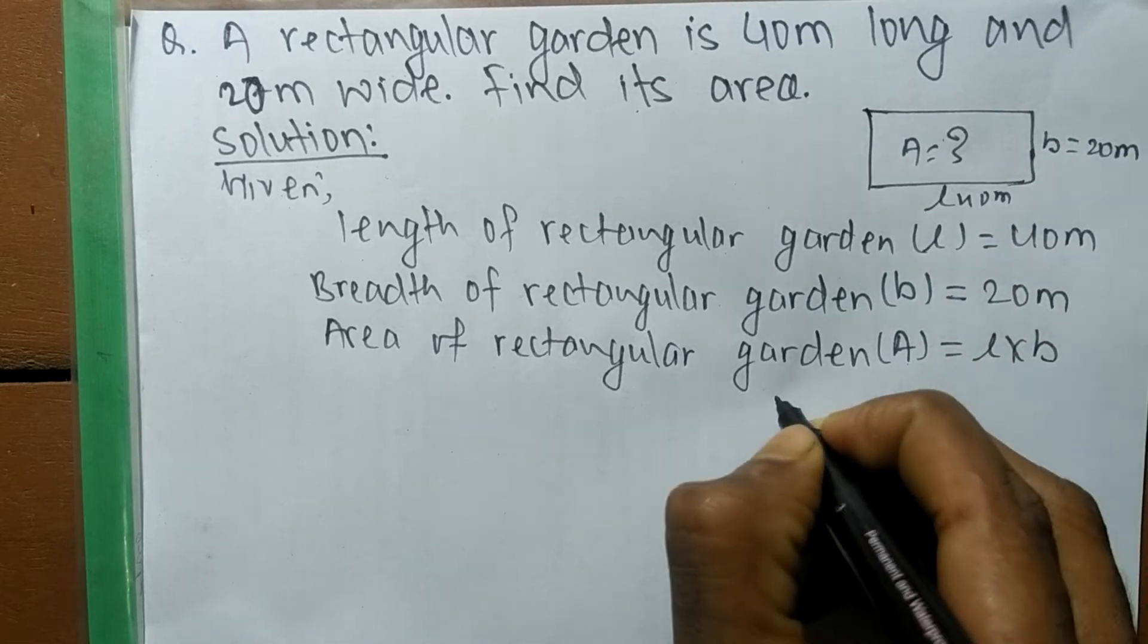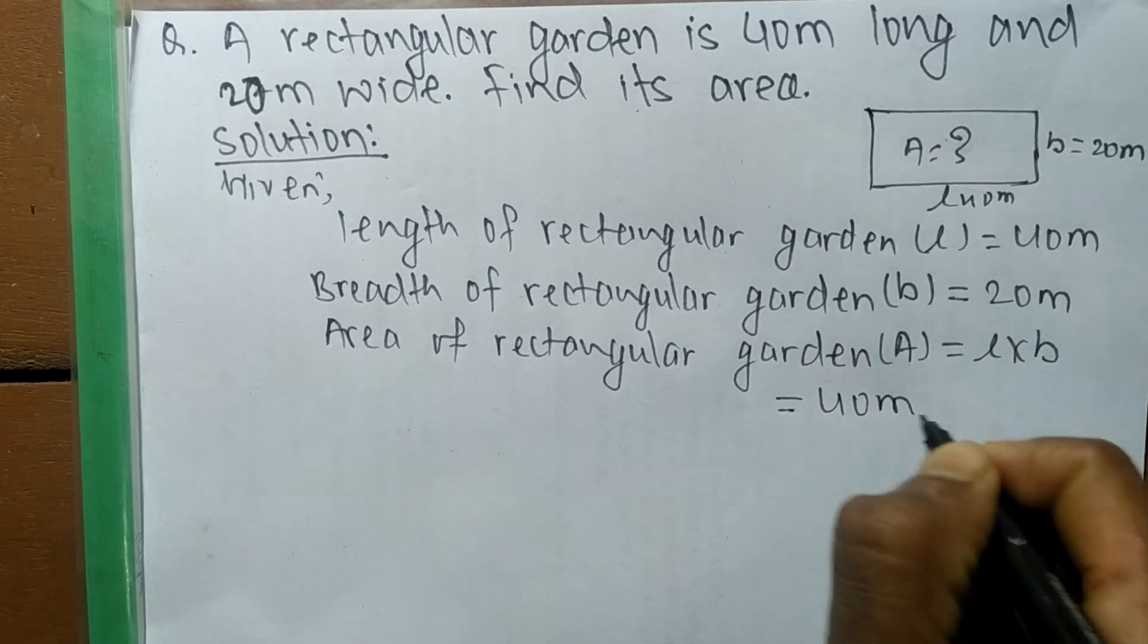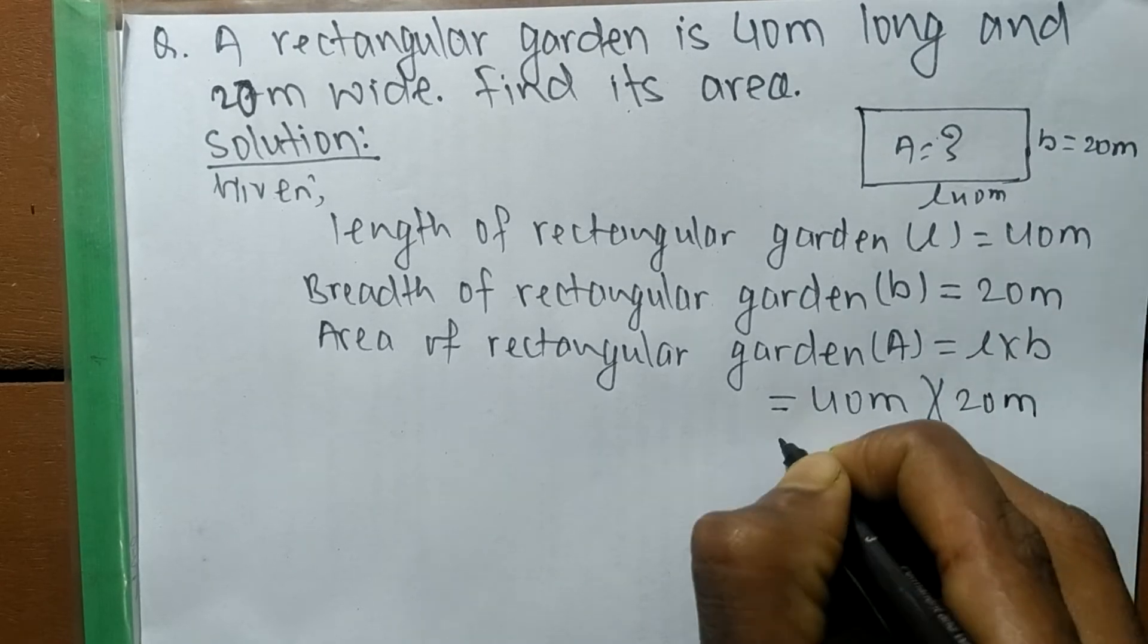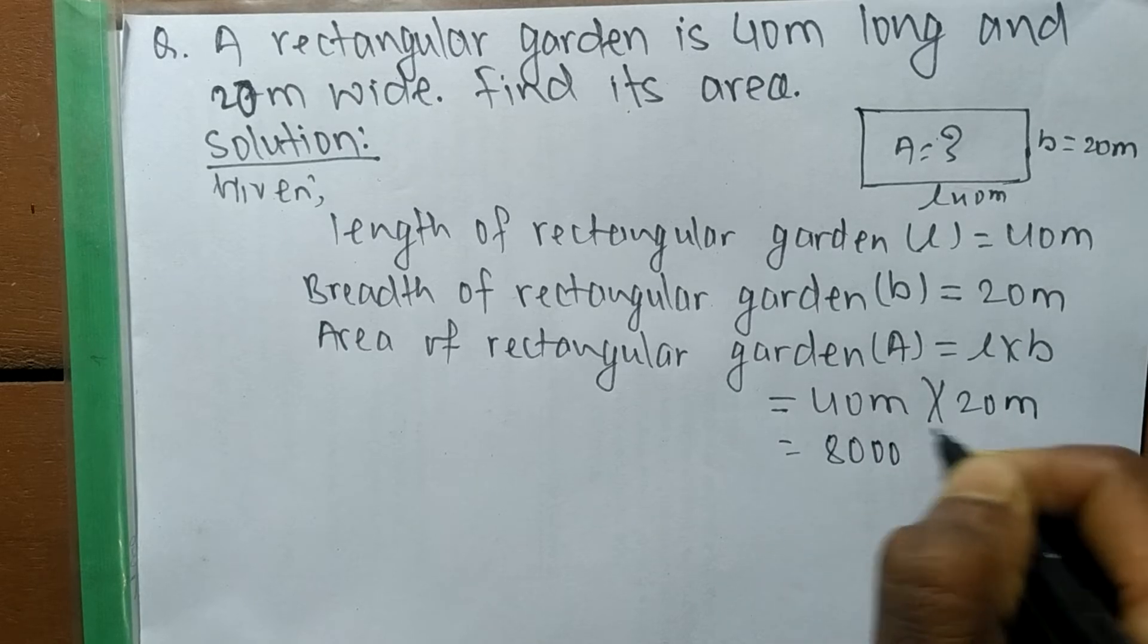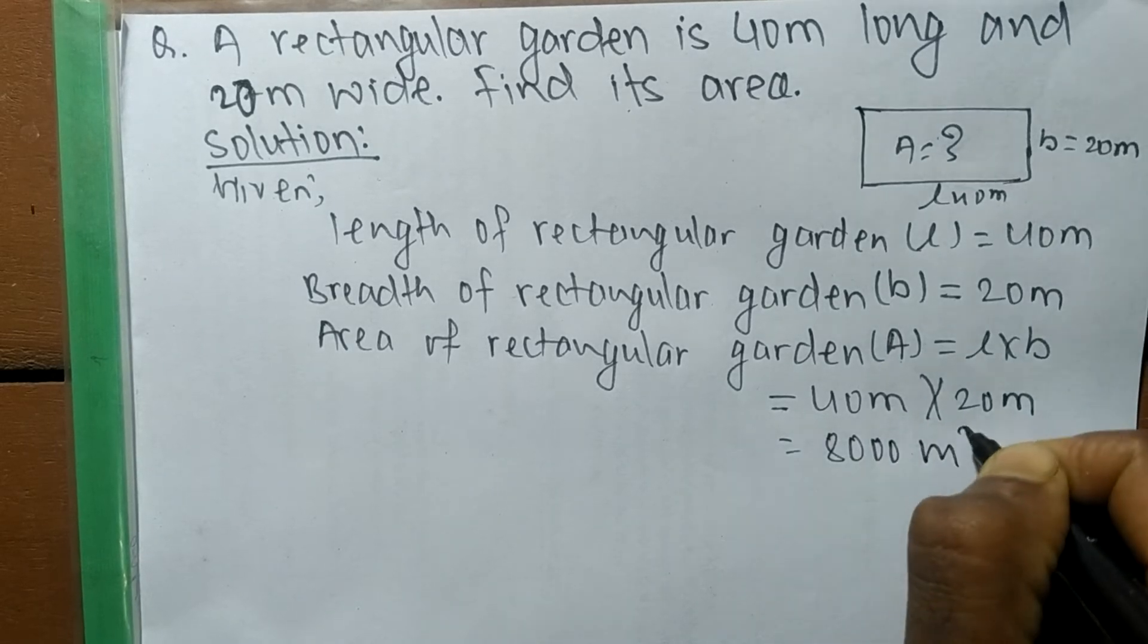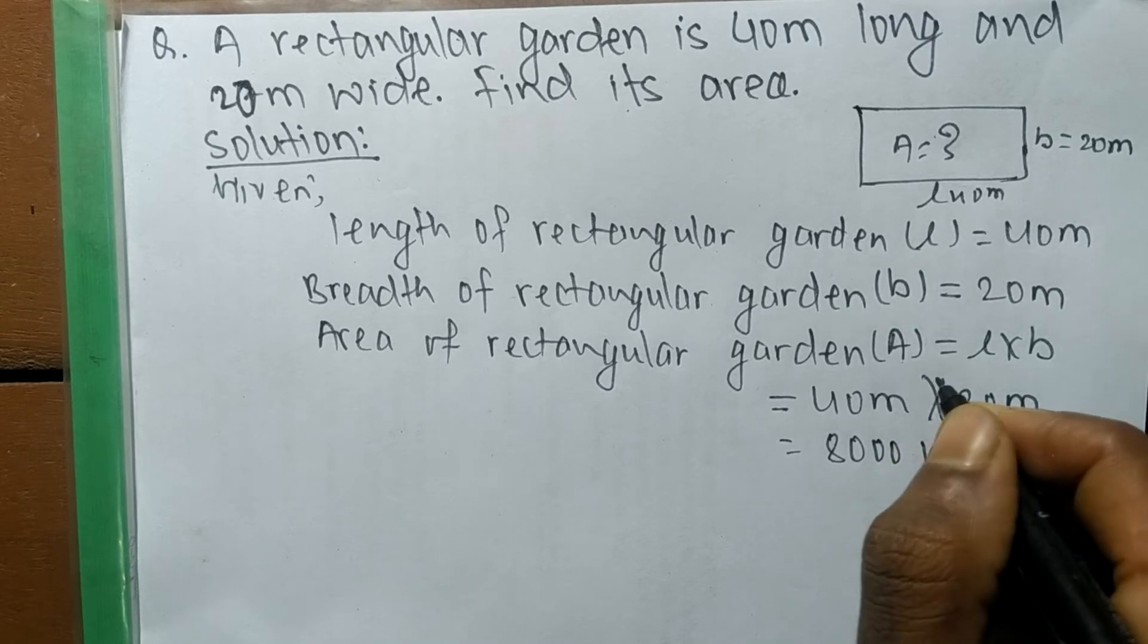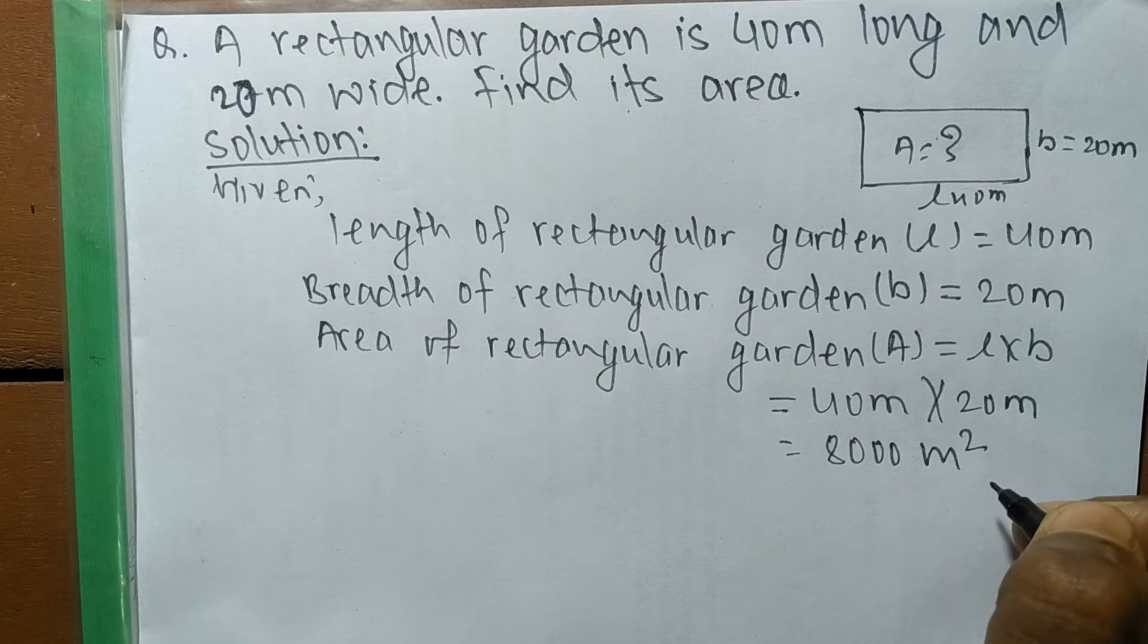So length L is here 40 meter, times breadth B is here 20 meter. So 40 times 20 means 800 meter times meter, means meter square. So the area of the rectangular garden is 800 meter square.